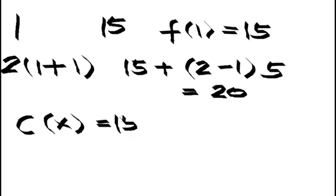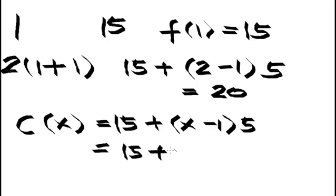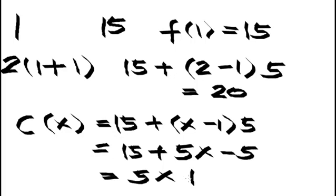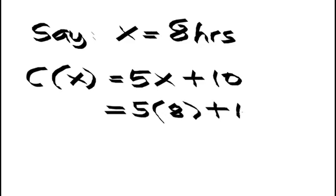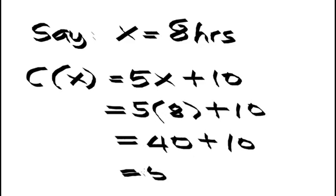To compute for the total charge, 15 plus X minus 1 times 5. Simplifying this, we will get the function 5X plus 10. Let's say your total hours is 8. To solve for the total charge, we use the function 5X plus 10. Substitute 8 to the equation and you will get 50 pesos as the final answer.